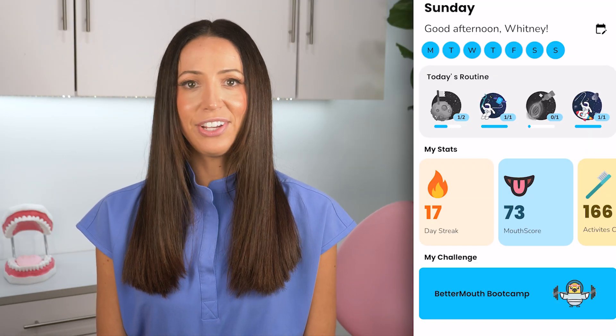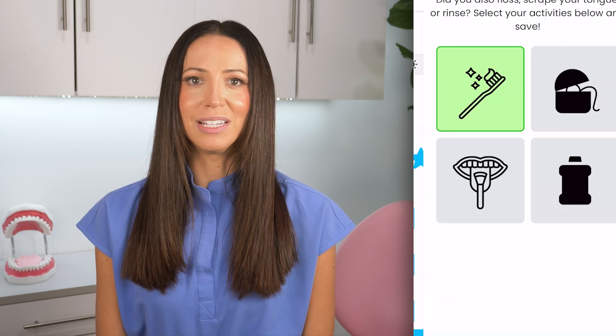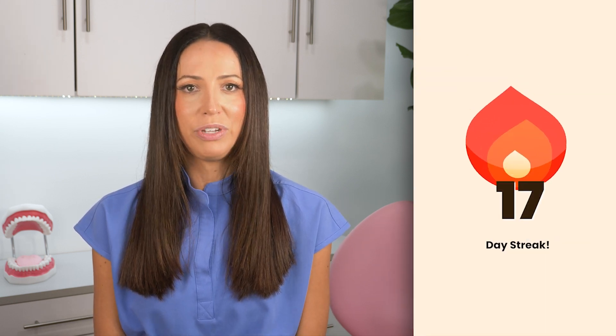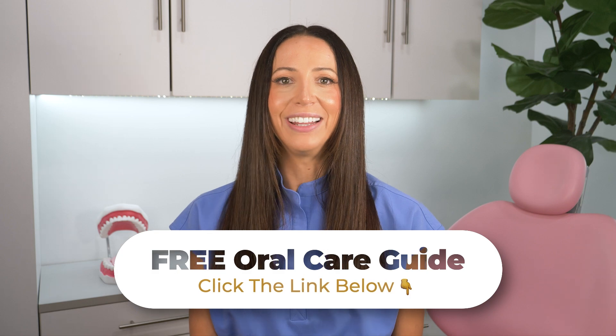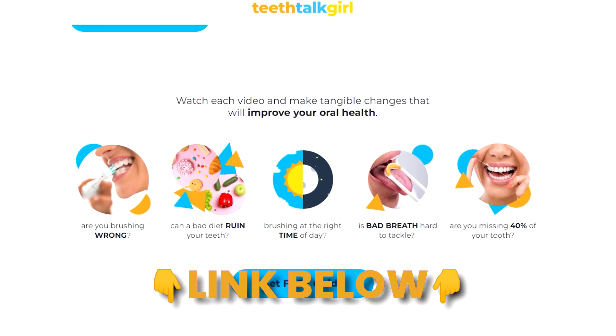Toothbrushing apps like Better Mouth can help you with this, providing features like the mouth score and daily streaks to allow you to monitor your brushing habits and ensure you're doing everything right to protect your teeth and stay on routine. But routine and consistency mean nothing if you're using improper techniques, such as flossing wrong or using your electric toothbrush incorrectly. So if you're interested in perfecting your oral care routine at home, check out my free oral care guide linked below. I made this video guide to help you properly brush, floss, use a tongue scraper, and more.